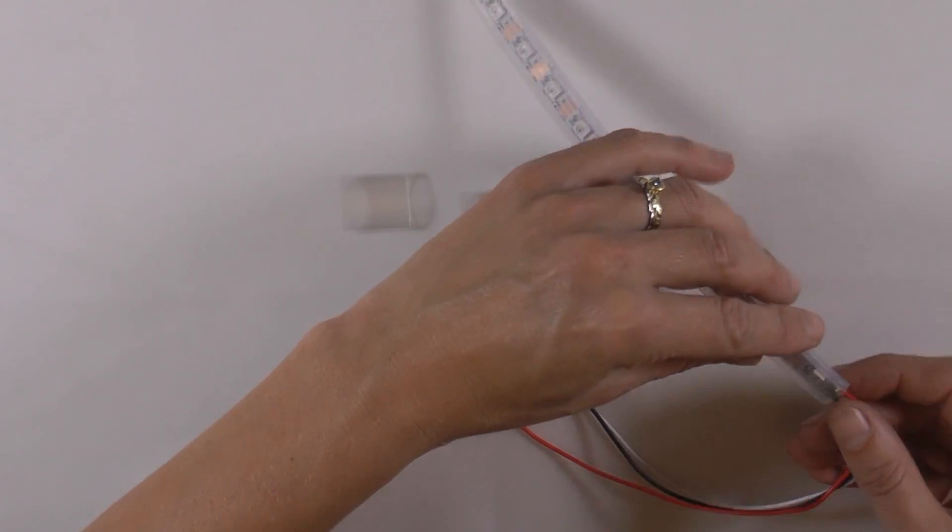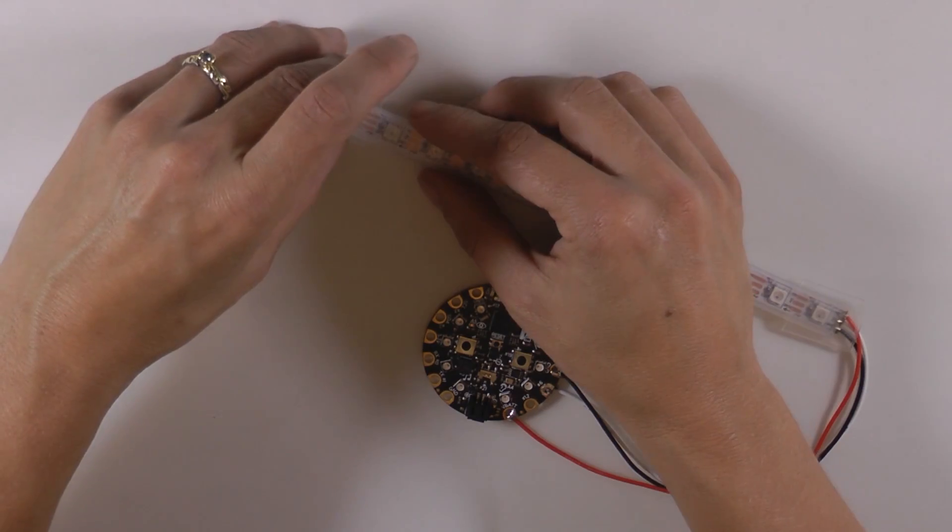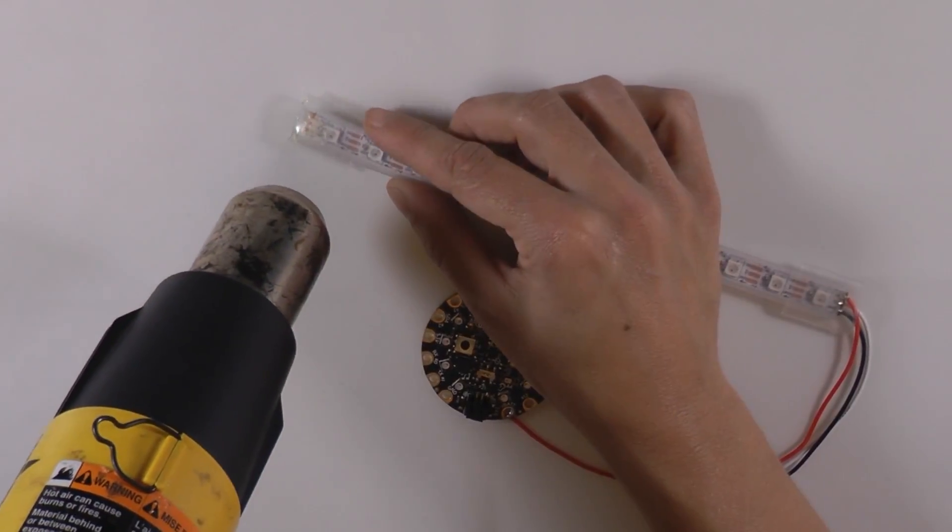Slip a small piece of clear half inch heat shrink over each end of the Neopixel strip. Fill the ends with hot glue and use a heat gun to secure the heat shrink over the wet glue.